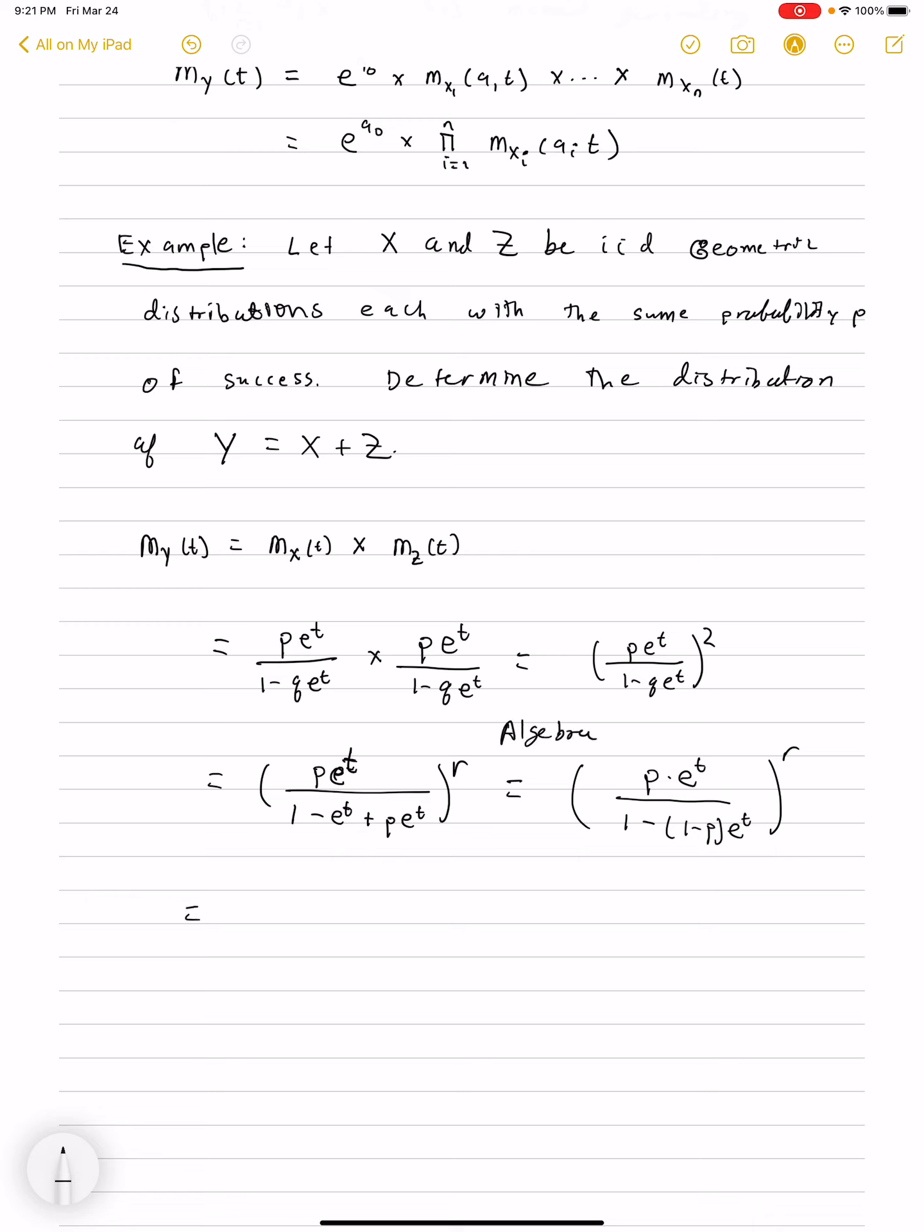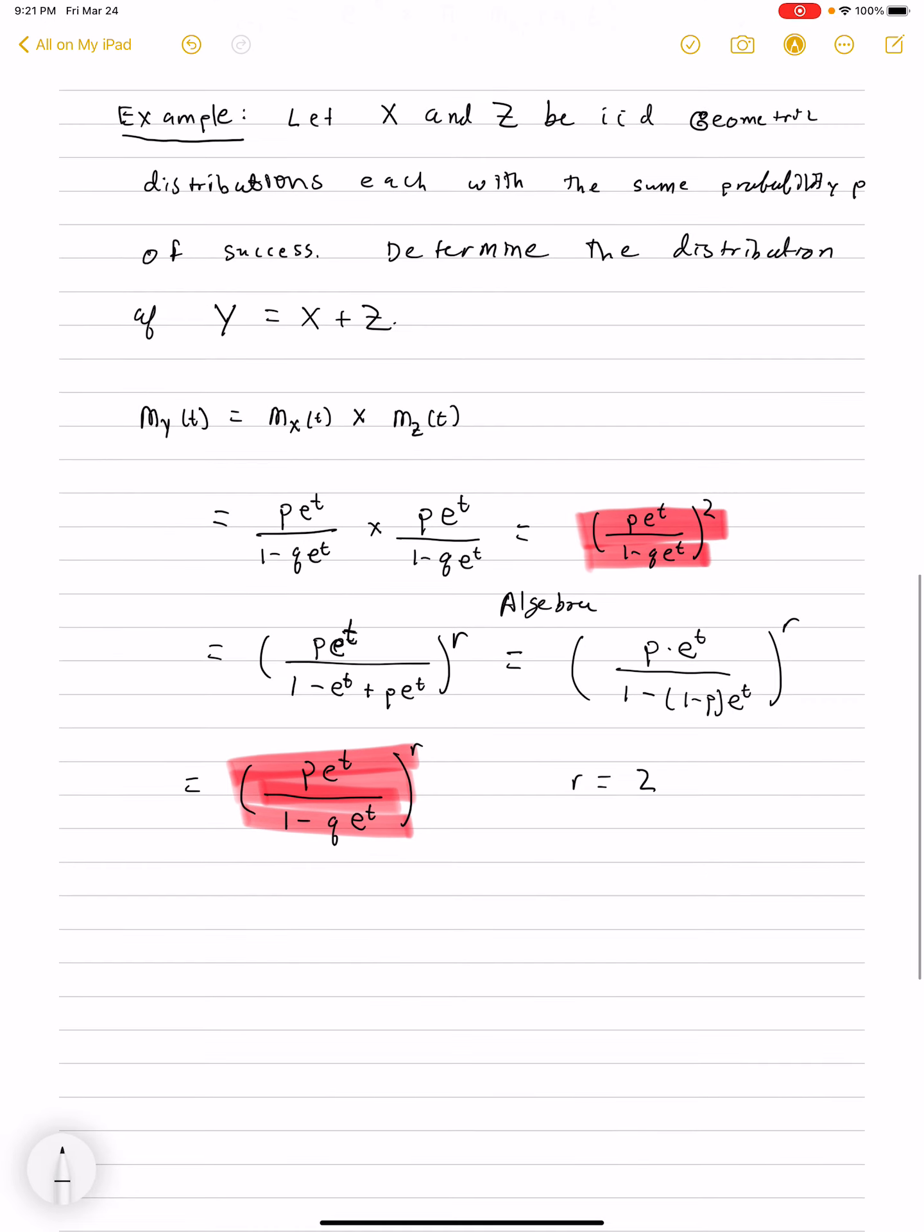This is p e^t divided by 1 minus q e^t to the r. And if we let r equals 2, we see that it's exactly the same as the distribution that we get. So this and this match if I let r equals 2.